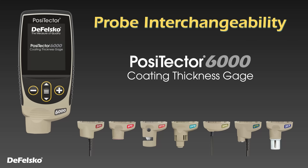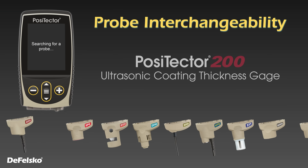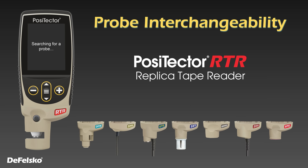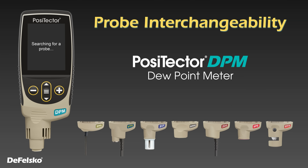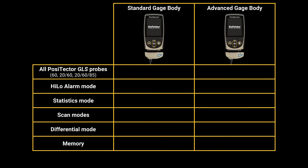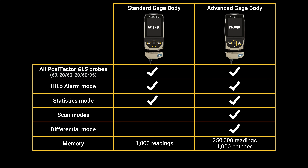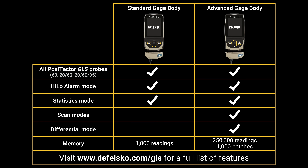The Positector gauge body is also compatible with any Positector probe, quickly converting from a gloss meter to a coating thickness gauge, surface profile gauge, environmental meter, and more. Two gauge bodies are available. The standard gauge body is compatible with all Positector GLS probes, has a high-low alarm mode, and can display on-screen statistics such as the average, standard deviation, min-max, and number of readings while measuring, storing up to 1,000 readings. The advanced gauge body includes all of the functionality of the standard model, plus storage of up to 250,000 readings and up to 1,000 batches, and additional functionality such as scanning and differential modes.